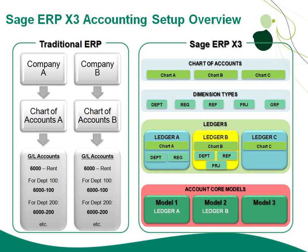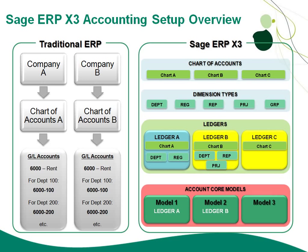And finally, remember that Sage GRP X3 supports multi-ledger accounting, which means for a single account core model, I can have multiple charts of accounts being used. For example, one chart to track analytical information and a separate chart for IFRS reporting. So for model 3, I'd like to use both ledger B and ledger C — which I can specify on my account core model.